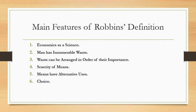Third, wants can be arranged in order of their importance. However, all wants are not equally important. Some are more important and urgent than others. Thus, a man's wants can be arranged in diminishing order of importance or priority. This is possible because the importance of each of them can be compared to make an appropriate choice, meaning that wants can be graded.